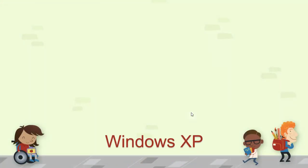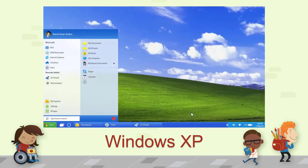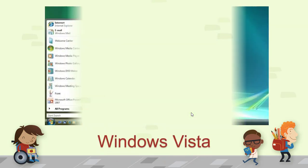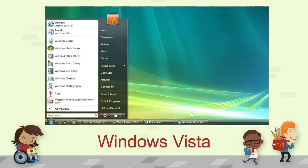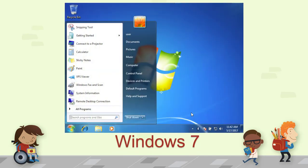First, we are looking at Windows XP — this is the Windows XP screen where you can see the taskbar and start menu. Next is Windows Vista — this is the Windows Vista screen. And next is Windows 7 — this is the Windows 7 screen.